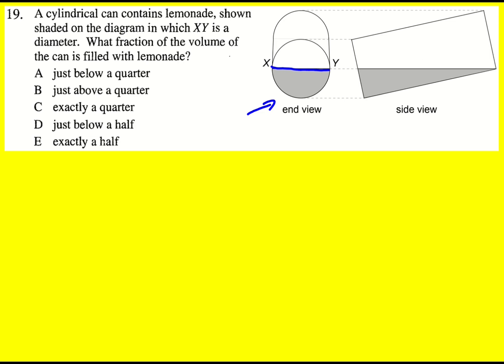But when we look from the side we can see that the can's actually been tilted. So although it looks like it's half filled from there, it then goes to the very corner like so. We're actually asked what fraction of the volume is filled with lemonade.